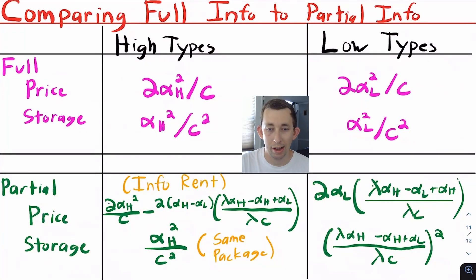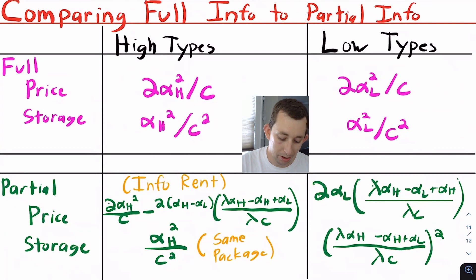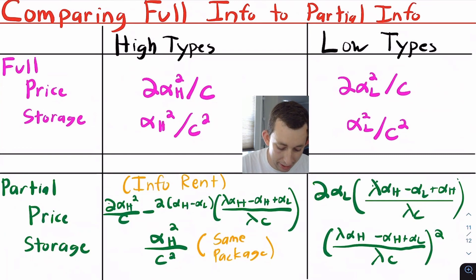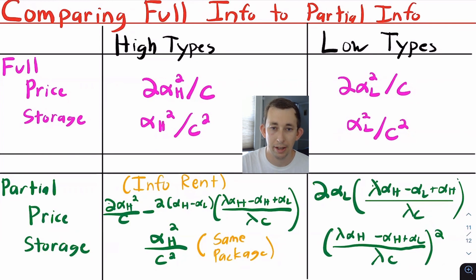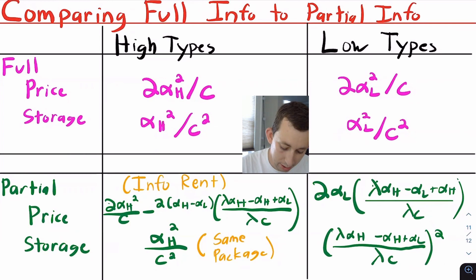Now that we've climbed over this gigantic mountain of a problem, I want to put the results into a table — in pink, the results from full information; in green, the results from asymmetric information. You can see that high types used to pay 2α_H²/c, but now they pay 2α_H²/c minus a large discount term. Why do they pay a lower price? Because the firm needs to incentivize high types to willingly reveal that they're a high type. That discount is called the informational rent.